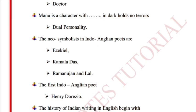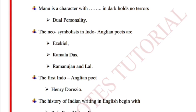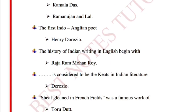The new symbolists in Indo-Anglican poetry are Nissim Ezekiel, Kamala Das, Ramanujan, and Lal. The first Indo-Anglican poet is Henry D'Arizio. The history of Indian writing in English begins with Raja Ram Mohan Roy.